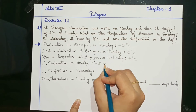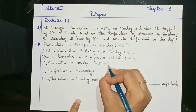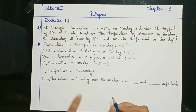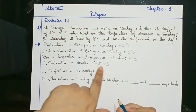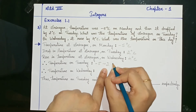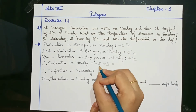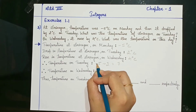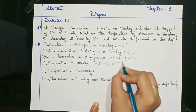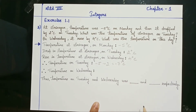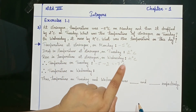Since the temperature dropped by 2 degrees, we write minus 5 minus 2. Since both signs are the same, in the answer you do addition: 5 plus 2 is 7, and you give the sign of the greater number. The greater number has a minus sign, so it becomes minus 7 degrees Celsius. Temperature on Tuesday is minus 7 degrees Celsius.